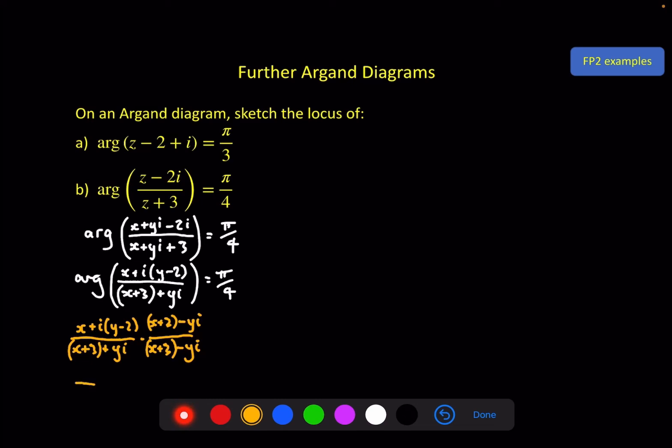So in the denominator, we end up with (x + 3) squared plus y squared. And in the numerator, we get whatever we get. Plus i times (y - 2)(x + 3), and then minus xy.